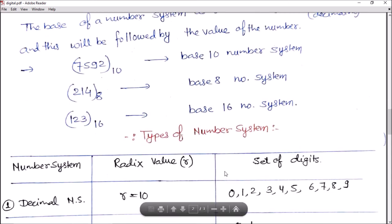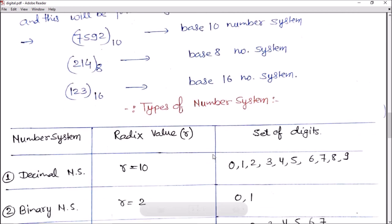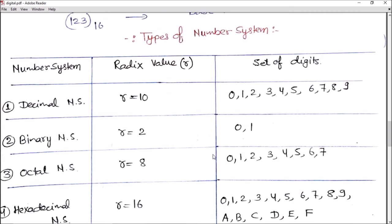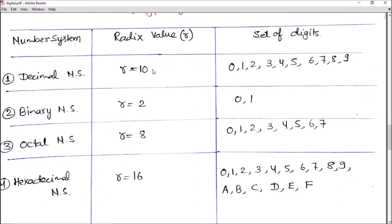What are the types of number systems? Generally, there are four types. Number one is decimal number system, where the radix or base value r equals 10, and we have 10 symbols starting from 0 to 9. In binary number system, the base value or radix is 2, therefore we have two symbols: 0 and 1.